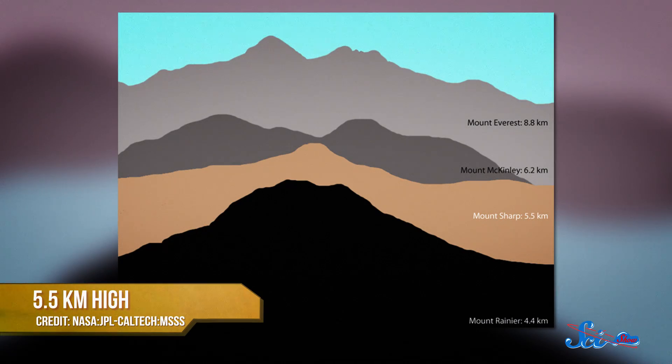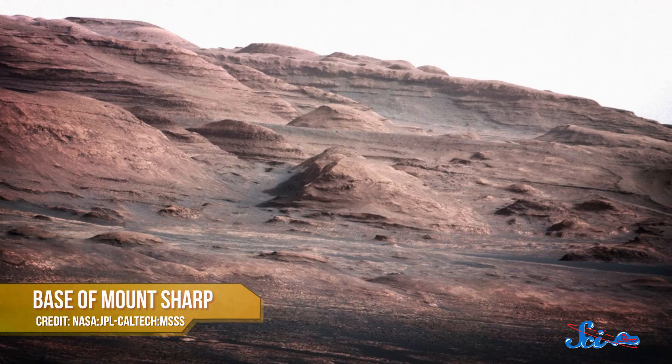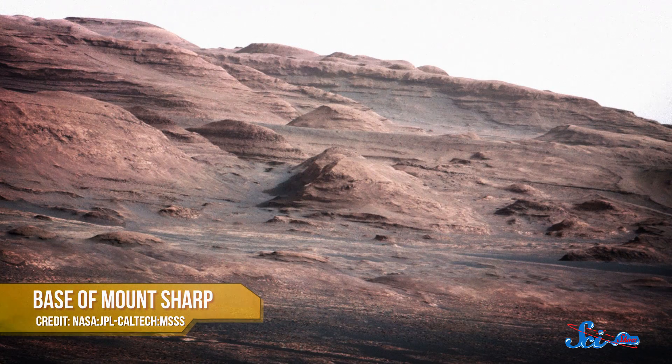The mountain is basically a five and a half kilometer high stack of rock layers, each recording a different chapter in Mars' environmental history.